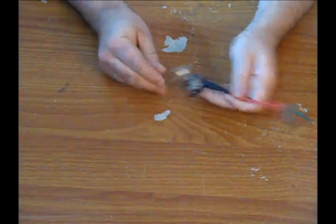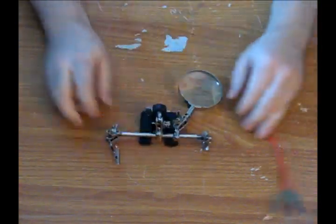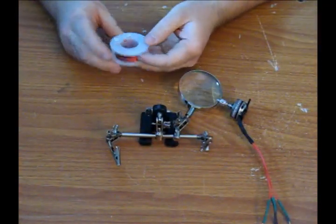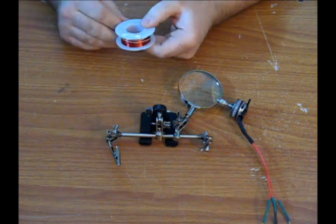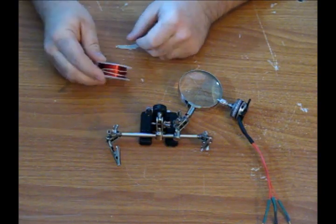To quickly go over what we need, we'll obviously need the motor that we want to rewind. In this case, I burned it up. A pair of helping hands goes a long way. A roll of enameled wire, whatever gauge you'll be needing, we can determine that later. In my case, I'll be using 27 gauge.